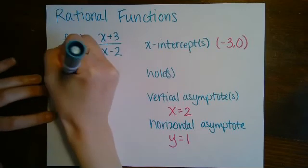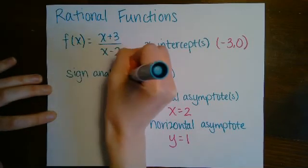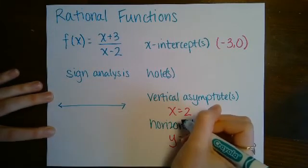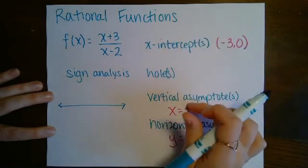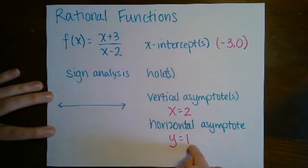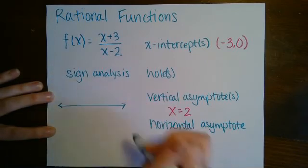So we're going to write a sign analysis. On our sign analysis we just start with basically what is our x-axis and then we label the key points. So the only key points we need to worry about here are the x-intercept and the vertical asymptote. If this was our x-axis, our horizontal asymptote would be parallel to our x-axis, so it's not going to show up on our sign analysis.